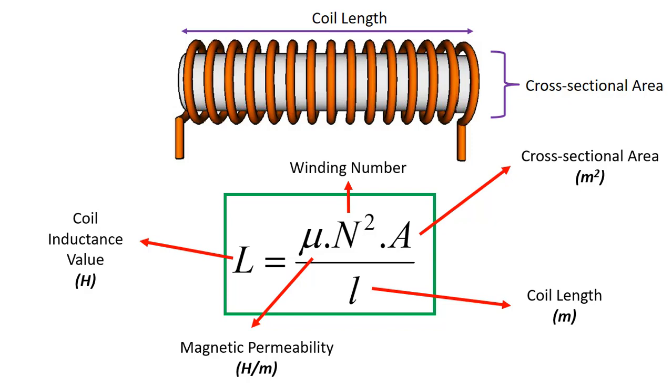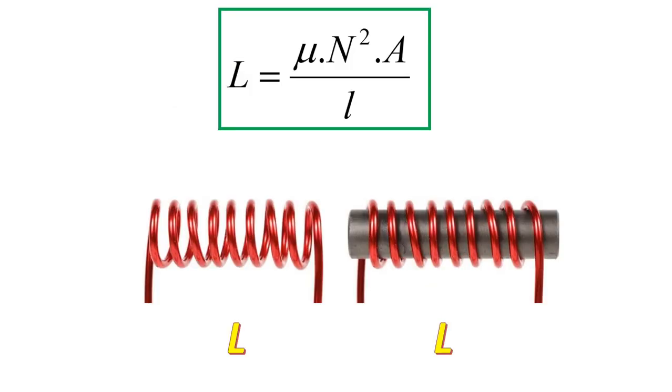Now, let's have a look at how the inductance value of a coil with a core length, core cross-sectional area, and number of turns is calculated. We can draw the following conclusions from this formula.